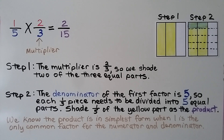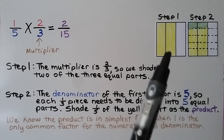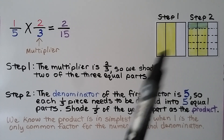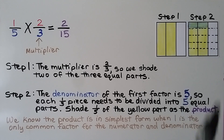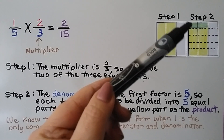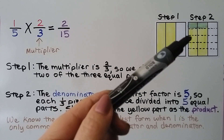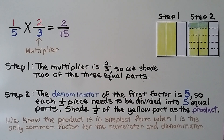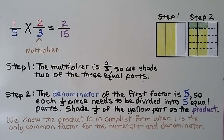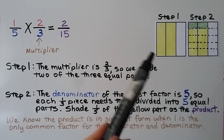For the second step, the denominator of the first factor is five, so each one-third piece is divided into five equal parts going across horizontally. Then we shade one-fifth of the part we shaded before.